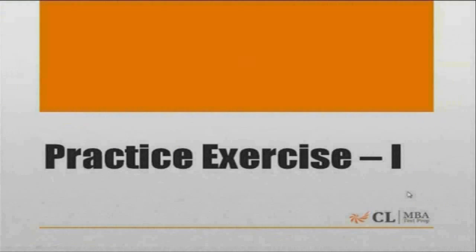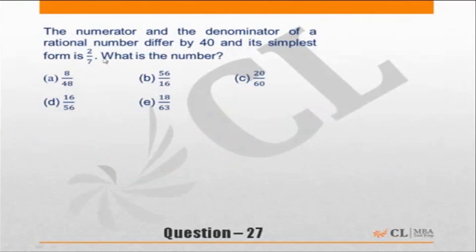Let's move to practice exercise 1. Question 27. The numerator and denominator of a rational number differ by 40 and its simplest form is 2 by 7. What is the number?